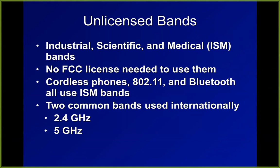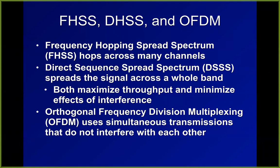Most radio frequencies are reserved for government and commercial use, but the two common bands for computer data are 2.4 GHz and 5 GHz. Frequency hopping spread spectrum hops from one channel to another; direct sequence spread spectrum uses many channels simultaneously. The point of both is to minimize interference, which is the number one problem with wireless networks — so many devices share these narrow channels that you're typically communicating through a haze of noise.